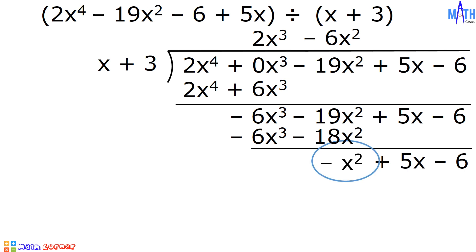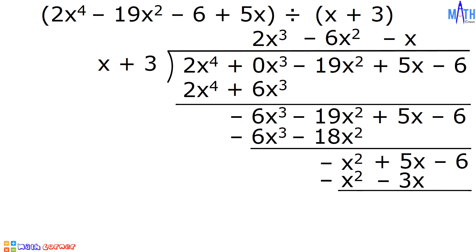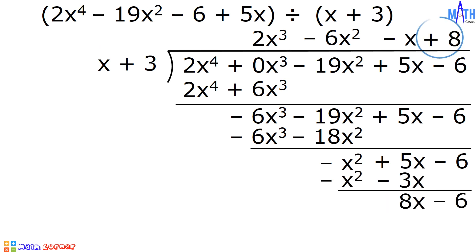Bring down positive 5x minus 6. Negative x squared divided by x is equal to negative x. Negative x times x is equal to negative x squared. Negative x times 3 is equal to negative 3x. Let us subtract. Negative x squared minus negative x squared is equal to 0. 5x minus negative 3x is equal to 8x. Bring down negative 6. 8x divided by x is equal to positive 8.